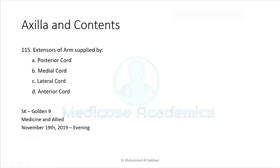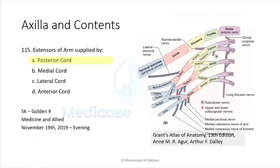Extension of the arm is performed by the triceps, which is supplied by the radial nerve. The radial nerve comes from the posterior cord of the brachial plexus. You must learn the brachial plexus thoroughly — first learn muscles, their actions, and nerve supply, then learn the brachial plexus. Here, the answer is the posterior cord, as injury leads to damage of the radial and axillary nerves, causing loss of arm extension and loss of posterior deltoid and triceps function.